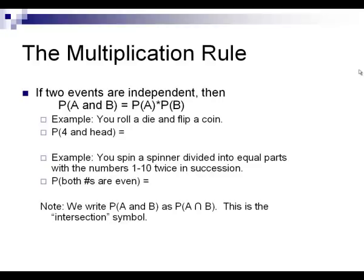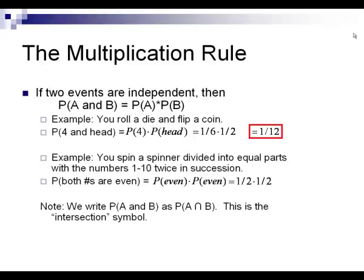The multiplication rule applies when you have independent events: the probability of A and B occurring equals the probability of A times the probability of B. Multiplication is for 'and'; addition is for 'or.' Example: rolling a die and flipping a coin — the probability of getting a 4 and a head is 1/6 × 1/2 = 1/12. Another example: a spinner divided into 10 sections (numbers 1–10) spun twice — the probability of both numbers being even is 1/2 × 1/2 = 1/4. The intersection symbol (upside-down U, ∩) means 'and' and corresponds to multiplication; the union symbol (U) means 'or' and corresponds to addition.